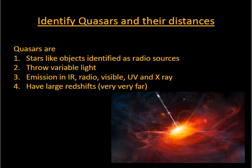Let's now talk about physical properties of quasars. Quasars are star-like objects identified with radio sources. They throw variable light. This means that the flux of the light varies with time and the time scale could be of hours, days or even months. Quasars emit in wavelengths of IR, radio, optical, X-ray and even ultraviolet spectrum. Quasars show large red shifts. This means they are sources in our universe which are millions and billions of light years away.